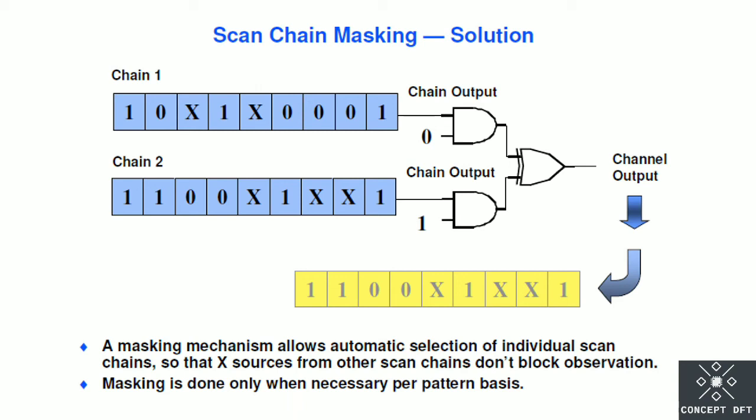If we will provide zero that will stop scan chain propagation towards XOR gate. And if we will provide one it will propagate the scan chain pattern to the output XOR gate. By using this technique we will observe single scan chain at a time. This is the solution for scan chain masking.